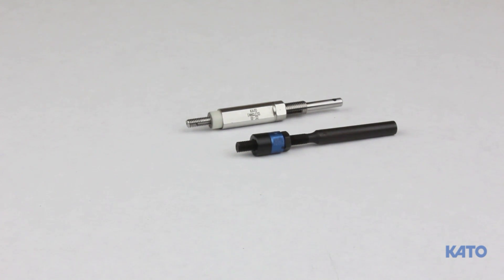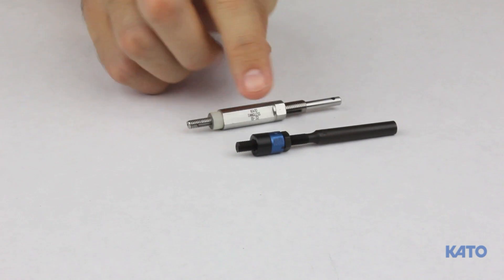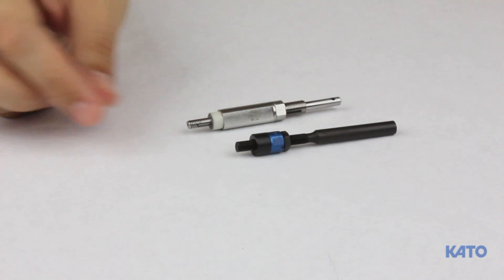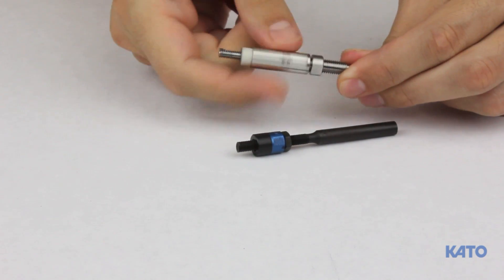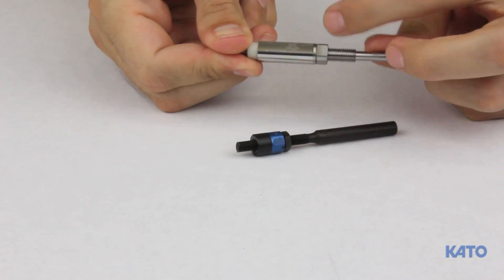Here we have two different mandrels. This one is for tangless and this one is for tanged. Here is the adjusting sleeve that will control installation depth. Use the lock nut to tighten the adjusting sleeve.